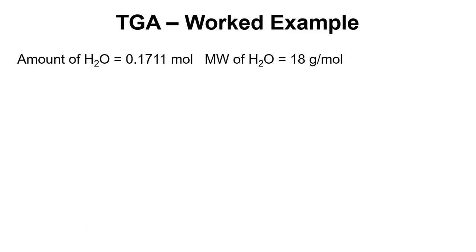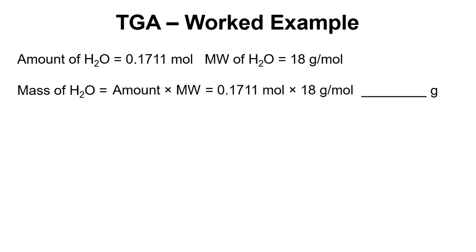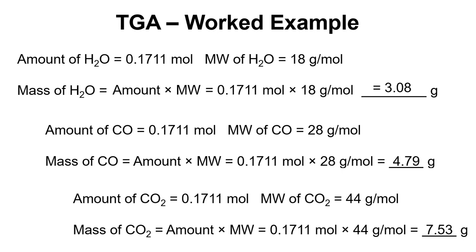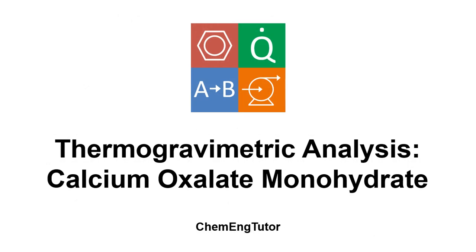We can now work out the mass of H₂O: the amount is 0.1711 moles, and amount times molecular weight gives us 3.08 grams. Repeating this process for carbon monoxide, we get 4.79 grams of CO being lost. For the third loss, CO₂, we get 7.53 grams of material being lost. That's been a video about the thermal decomposition of calcium oxalate monohydrate.